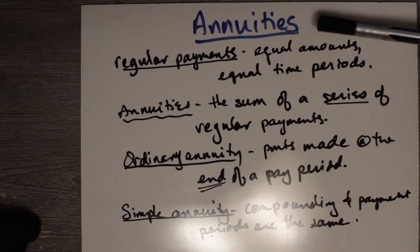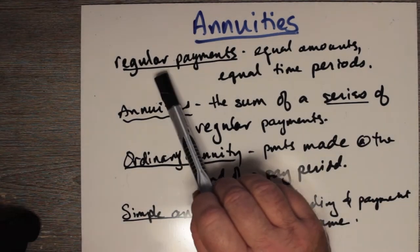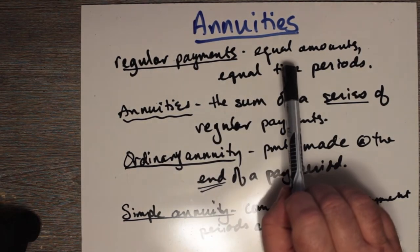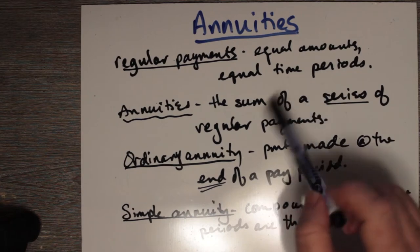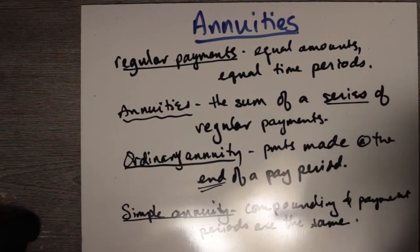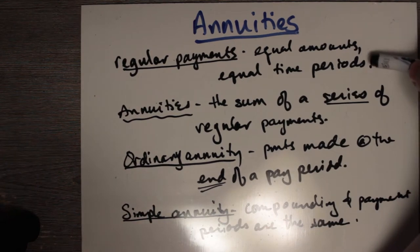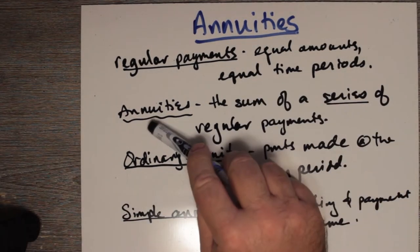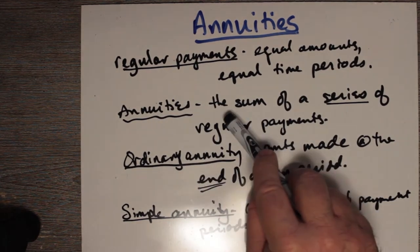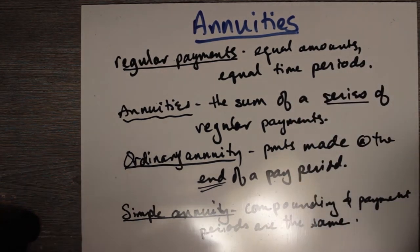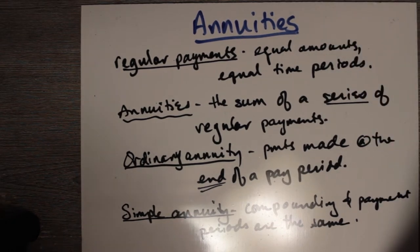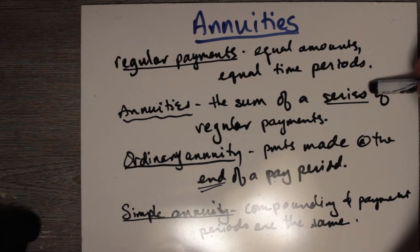This section is on annuities. Annuities consist of regular payments — equal amounts and equal time periods. Maybe the regular payments are every month. The word annuity itself is a sum of a series of regular payments. Up until now we've been talking about compound interest and simple interest as arithmetic and geometric sequences, but now this is the first encounter with a series.